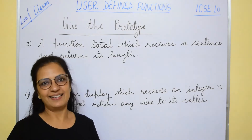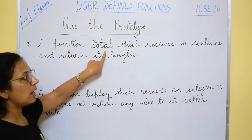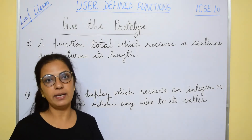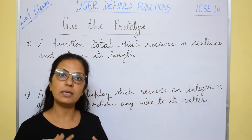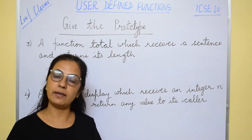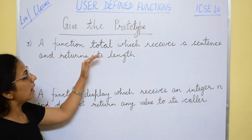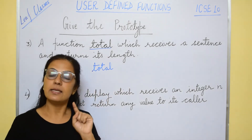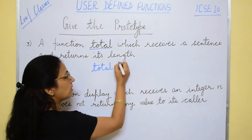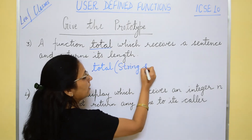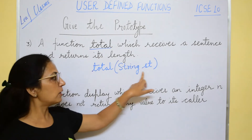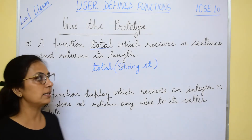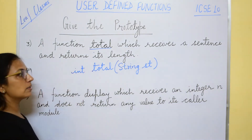We will be doing more questions and I hope it will be clear to you. The next is to write the prototype for a function total, which receives a sentence and returns its length. Please check that here no variable name is specified and no data type is specified. So we have to read it carefully to understand how many arguments there are, what the return type will be, and what the argument type will be. The function name is total. It receives a sentence — a sentence means a group of words, so the data type will be String, and I can write any variable name since it is not mentioned in the question, so String st. And it returns its length — the length of a sentence is always int type, so the return type is int.